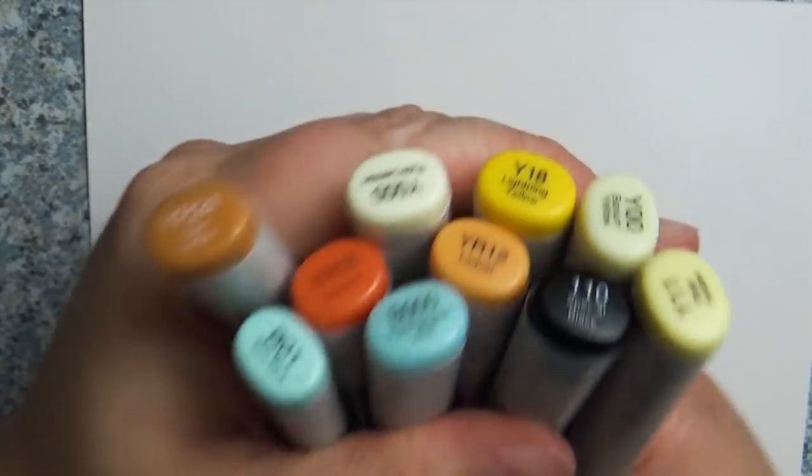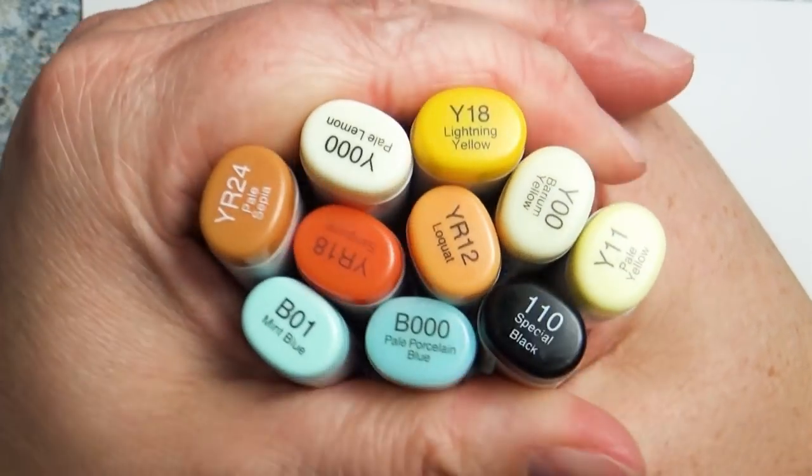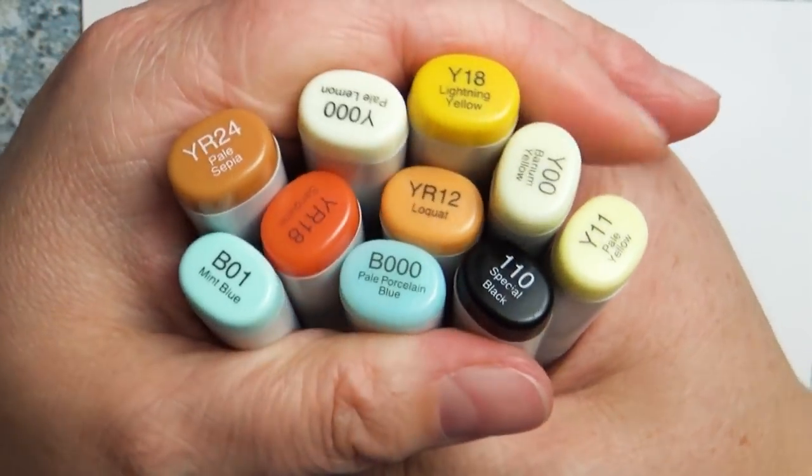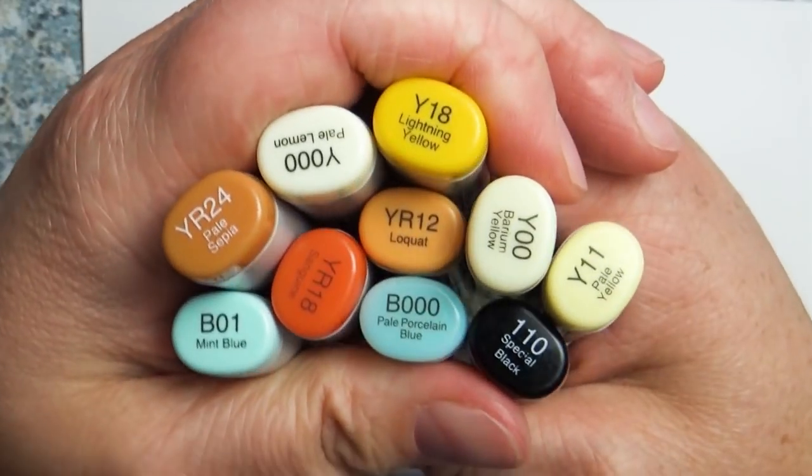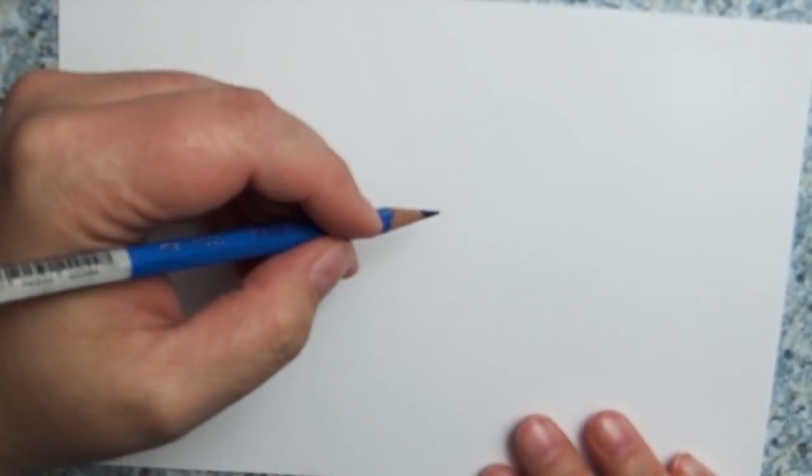For this coloring process I'm going to be using several different shades of Copic markers. To help you out I'll either show you the cap when I'm using a different color or I'll post it to the side of the screen. Now the first step in creating a candle flame is to actually sketch out the design of the candle and the flame itself.